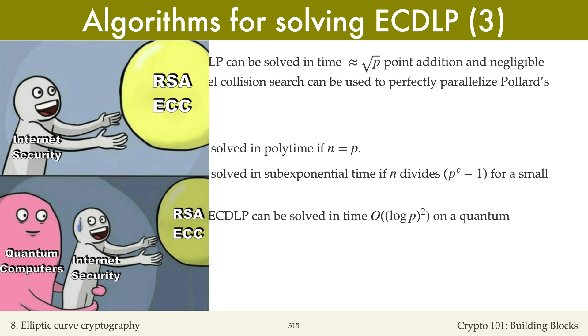Nonetheless, quantum-safe alternatives to RSA and ECC have been developed. In August 2024, NIST published standards for Kyber and Dilithium, which are lattice-based key encapsulation and signature schemes that appear to resist attacks by quantum computers. Kyber and Dilithium are viable replacements for RSA and ECC.